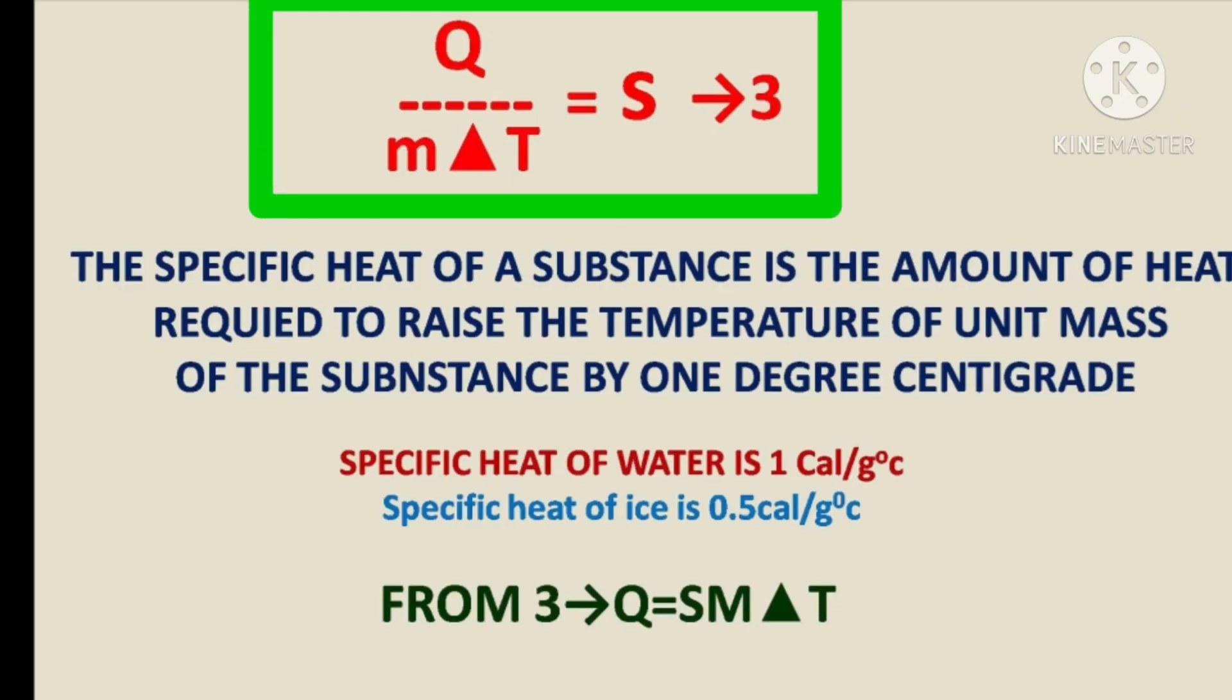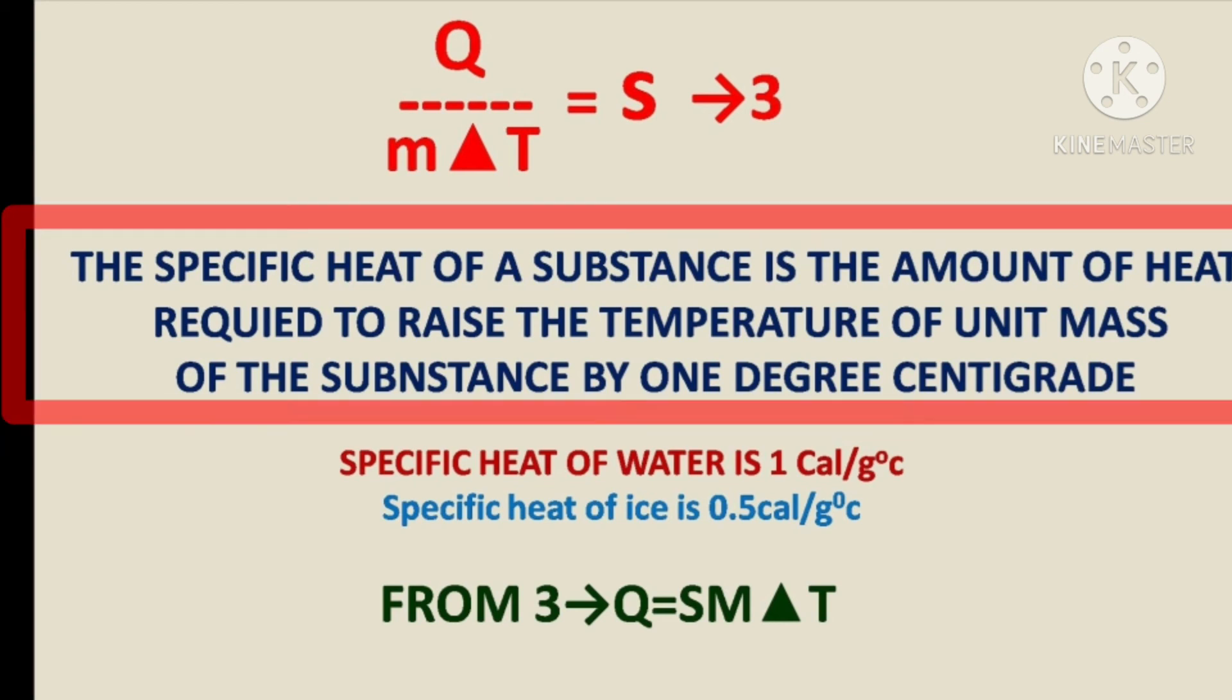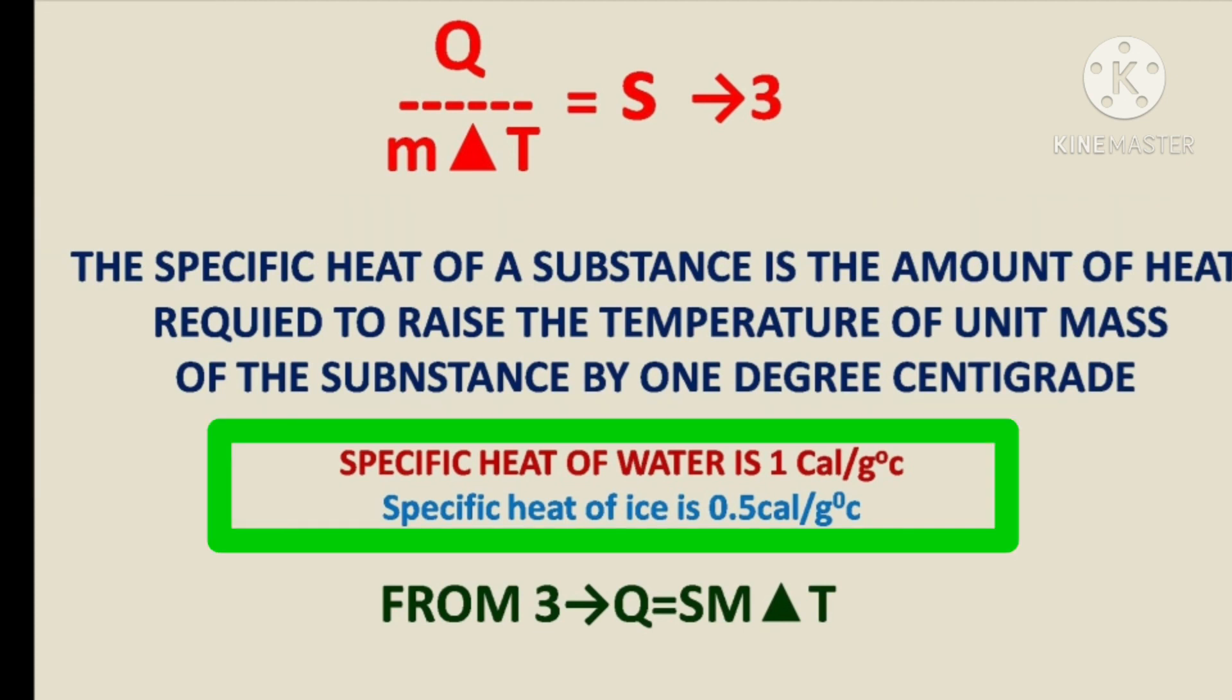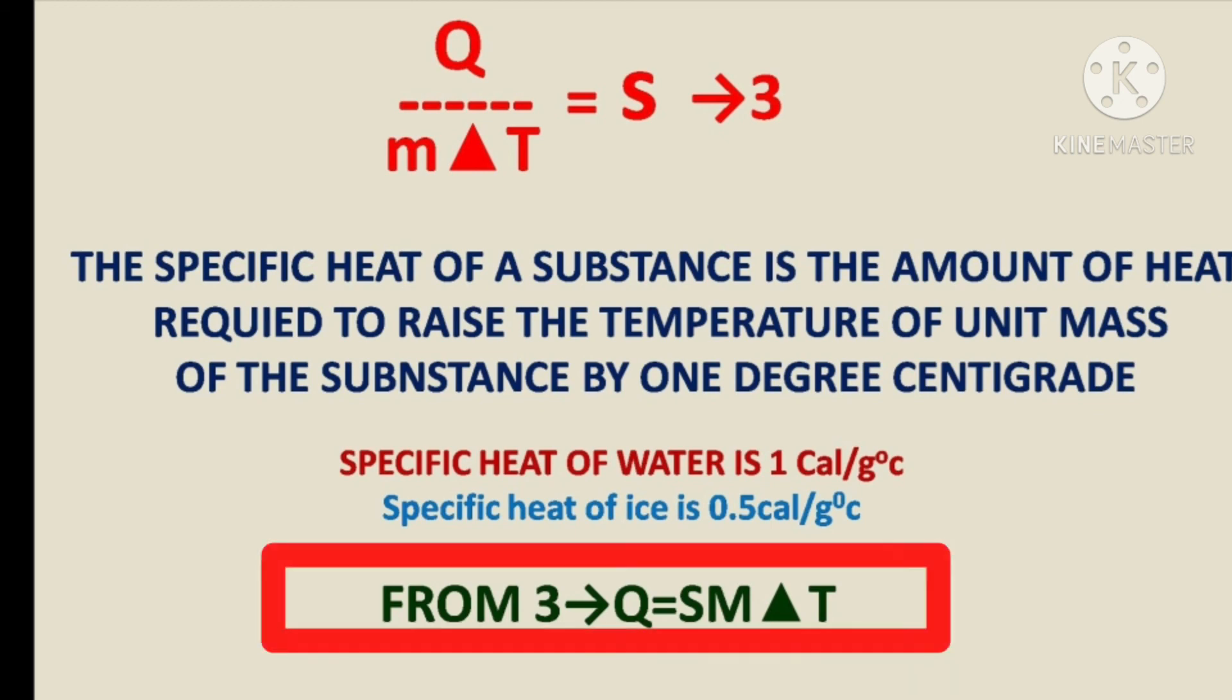Just imagine, in this equation, if denominator is 1, mass, and Delta T is also 1, then the definition will be the specific heat of a substance is the amount of heat required to raise the temperature of unit mass of the substance by 1 degree centigrade. The specific heat of water is 1, and ice is 0.5 in CGS, and Q is equal to S M Delta T.